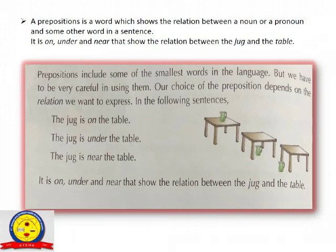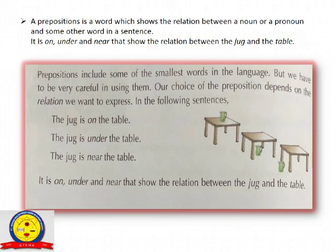So, preposition is used according to the relation you want to express. It is 'on', 'under', and 'near' that show the relation between the jug and the table. In this video we have discussed about prepositions, nouns, and pronouns. In our next video we will discuss how many types of prepositions there are and where we can use them.